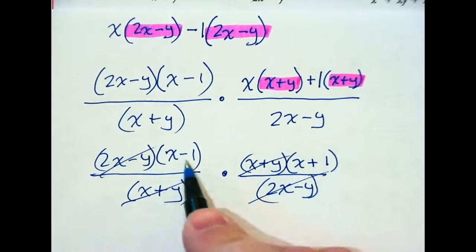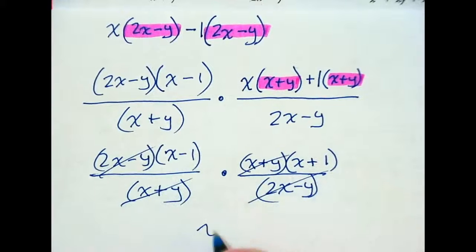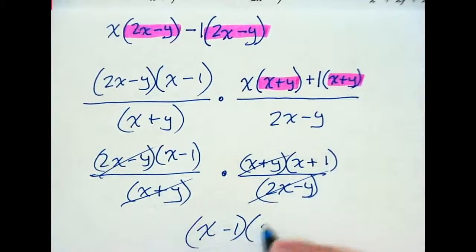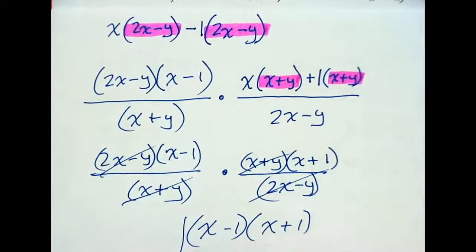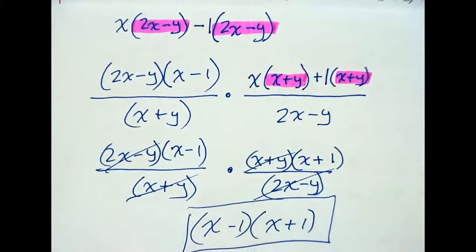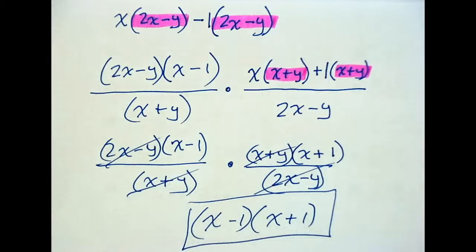And we're left with? X plus 1. X minus 1 times X plus 1. What pattern is that? Difference of two perfect squares. Difference of two perfect squares. Not that we knew that. We could call it X squared minus 1 if we wanted, but there we go.